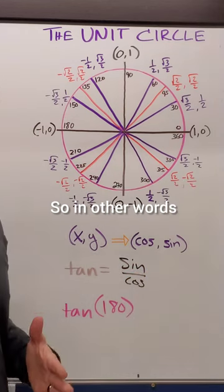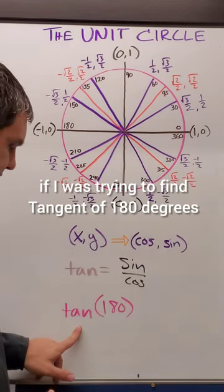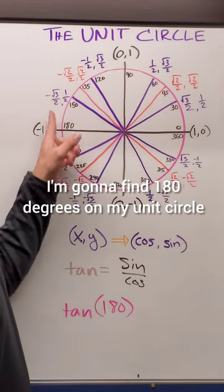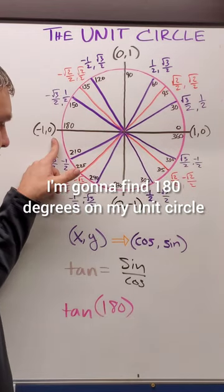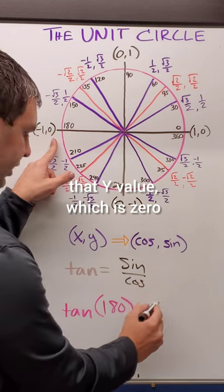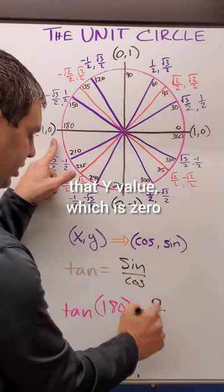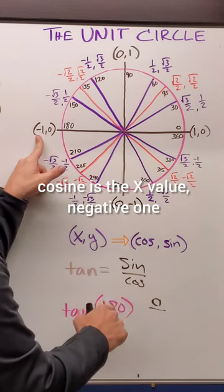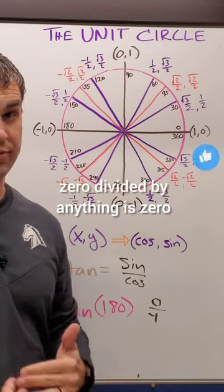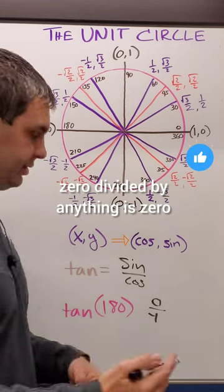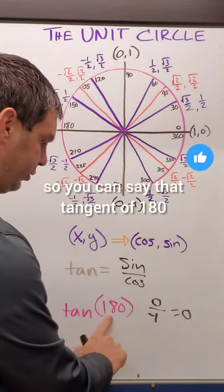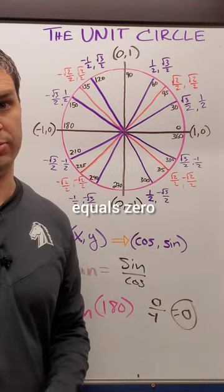So in other words, if I was trying to find tangent of 180 degrees, I'm going to find 180 degrees on my unit circle. The sine value is that y value, which is zero. Cosine is the x value, negative one. And remember, zero divided by anything is zero. So tangent of 180 equals zero.